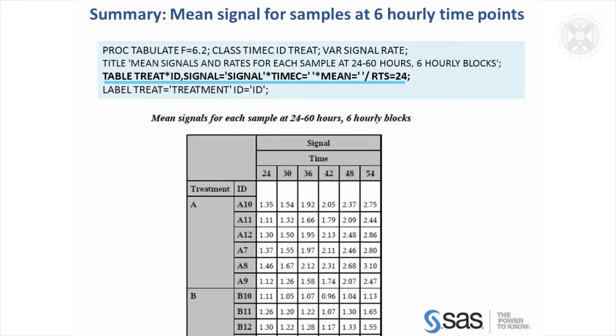And then after a comma, then we have the columns are specified and the summary statistic. And we can use the label statement to give labels to each of the effects in the table.